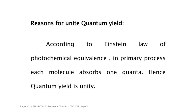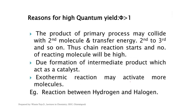According to Einstein's law of photochemical equivalence, in the primary process each molecule absorbs one quantum of light radiation. Hence, quantum yield is always equal to 1 for the primary process.